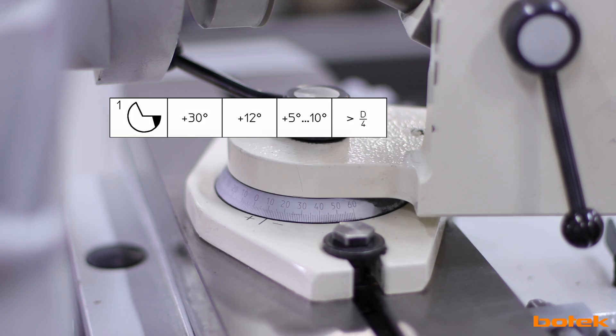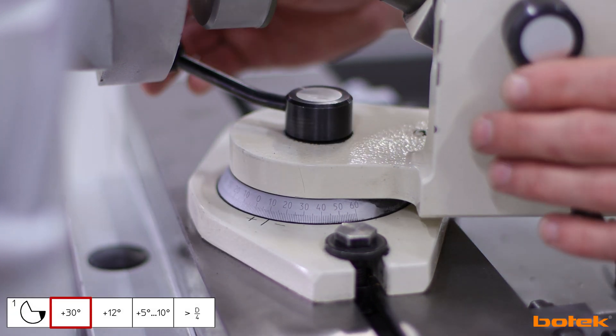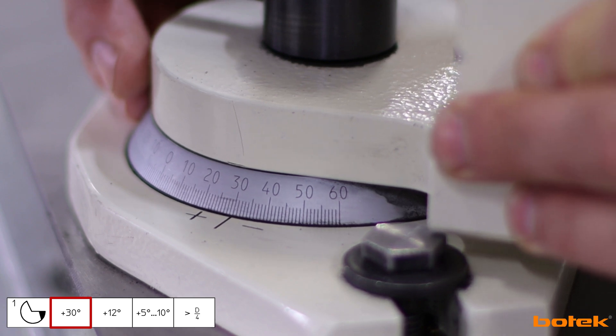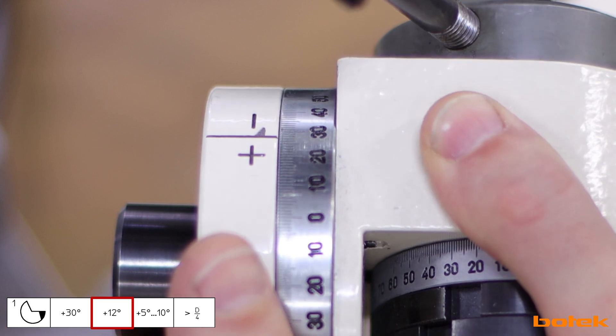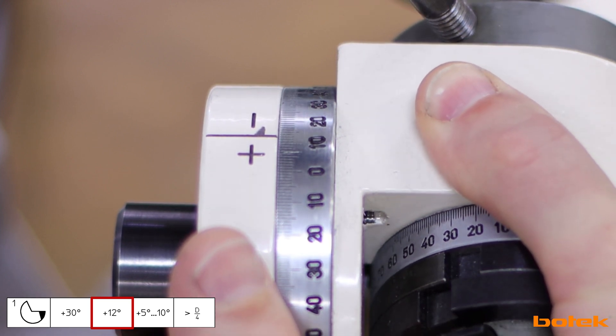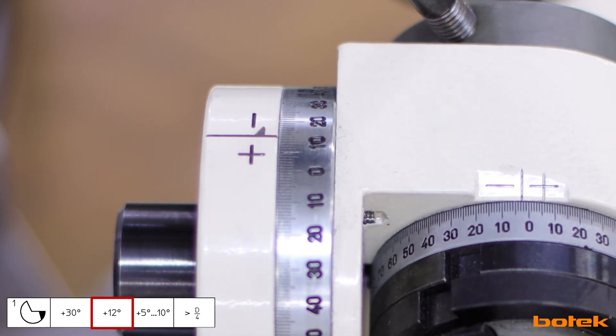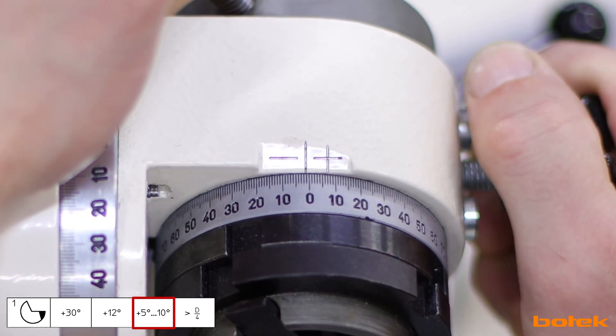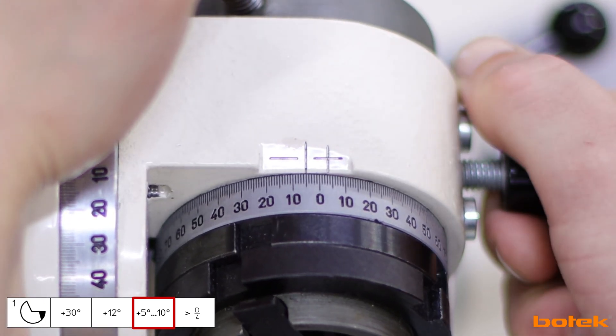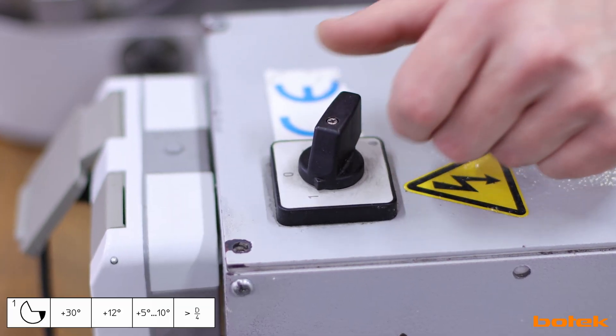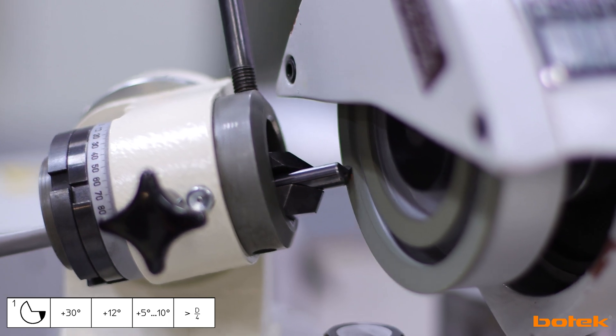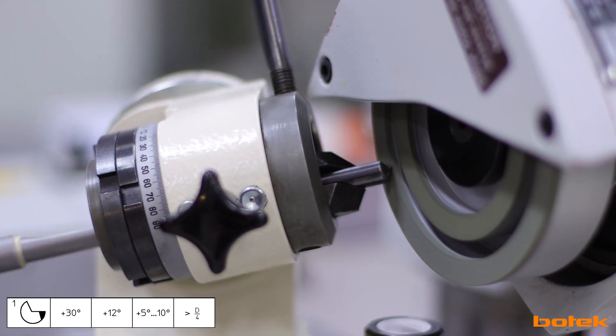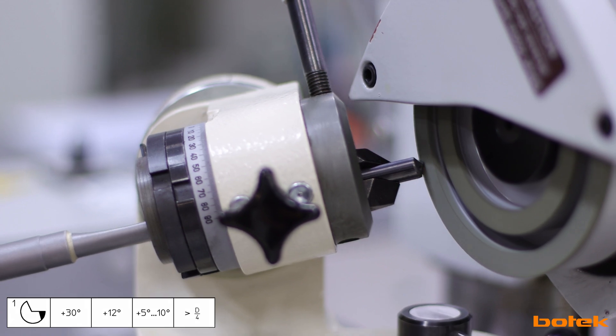We start by grinding the outer cutting edge. Rotate the swivel angle to plus 30 degrees, the tilt angle to plus 12 degrees, and set the torsion angle to plus 5 degrees. Select the direction of rotation and start the machine. In an oscillating motion grind the drill head on the roughing wheel until the wear is completely removed.